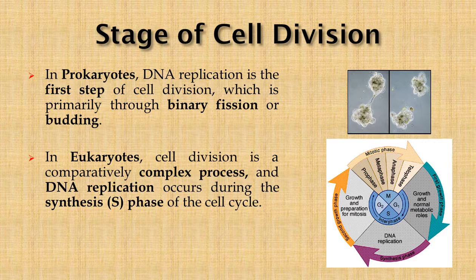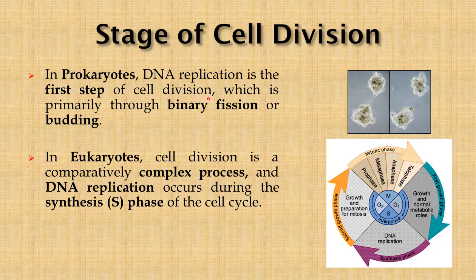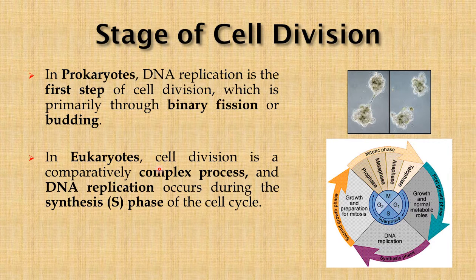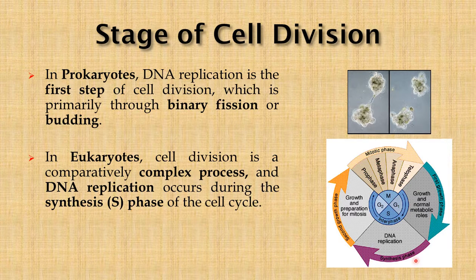Next: stages of cell division. In prokaryotes, DNA replication is the first step of cell division, by which the cell actually divides either by binary fission or by budding, as shown in this figure. Whereas in eukaryotes, cell division is a comparatively more complex process and DNA replication occurs during the synthetic or S phase of the cell cycle, as shown in the diagram.